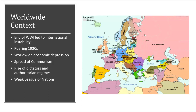Just some worldwide context before we start. We have the end of World War I in 1919, which led to a lot of international instability as all of the new nations in Europe had to figure out how to govern. Germany is going to attempt a democracy called the Weimar Republic after having been a monarchy for a long time. We also have the Roaring Twenties happening, mainly in the U.S., but also to some extent in Europe, not as much in Germany.